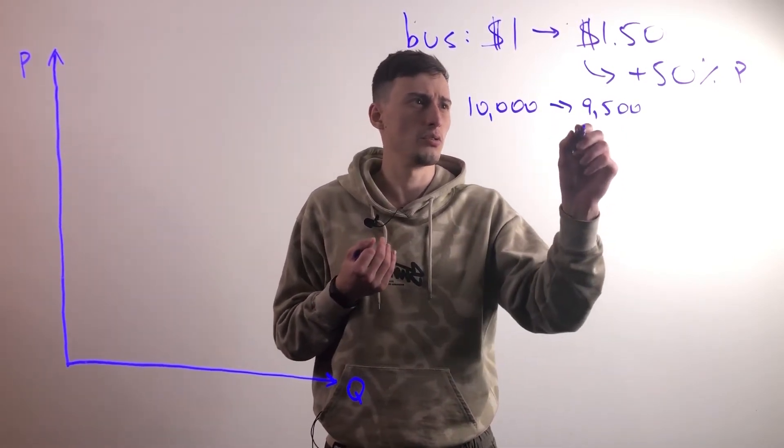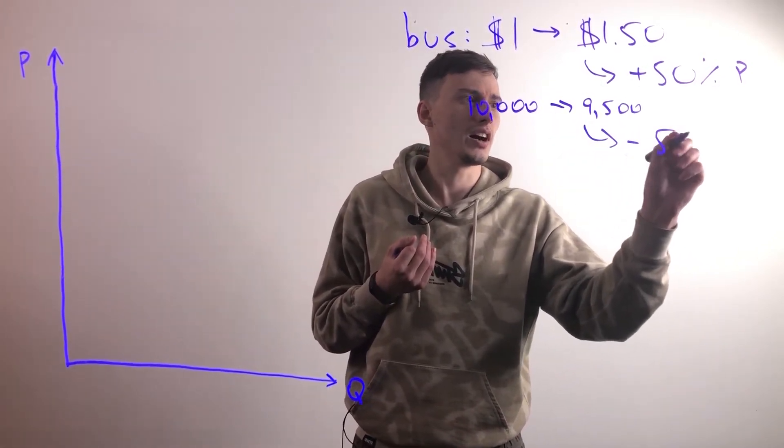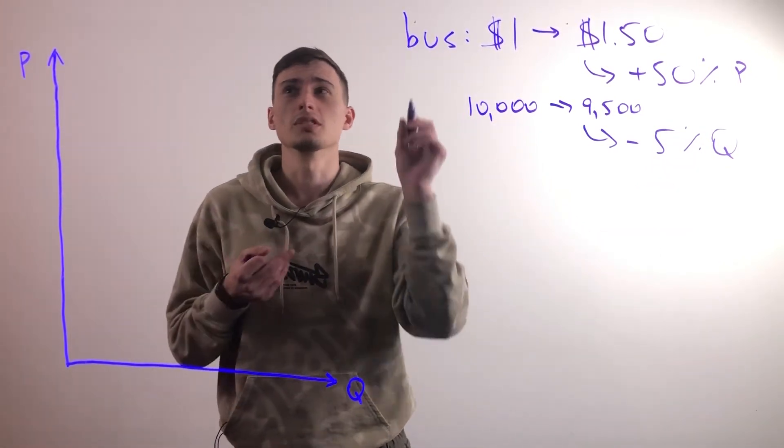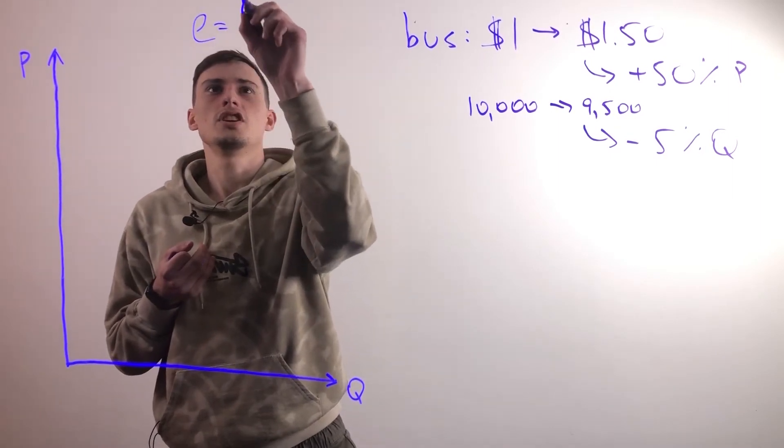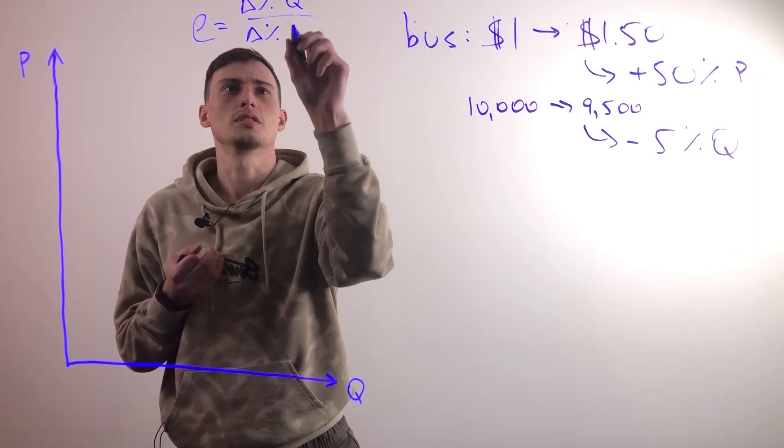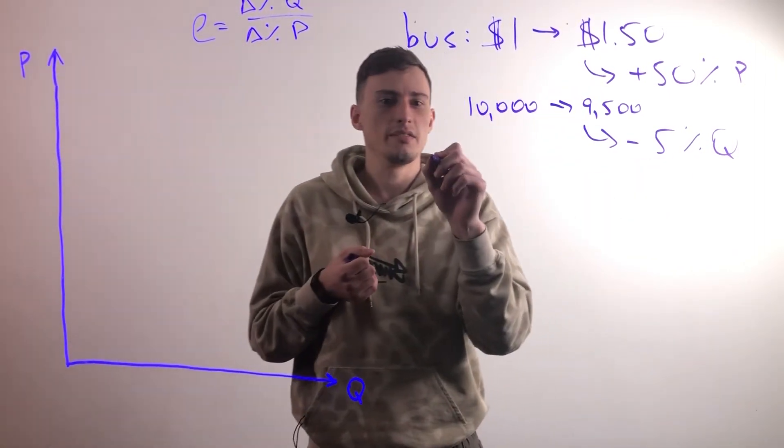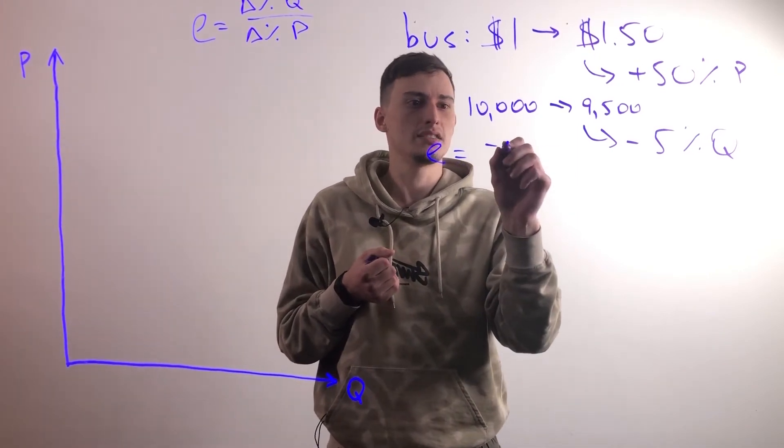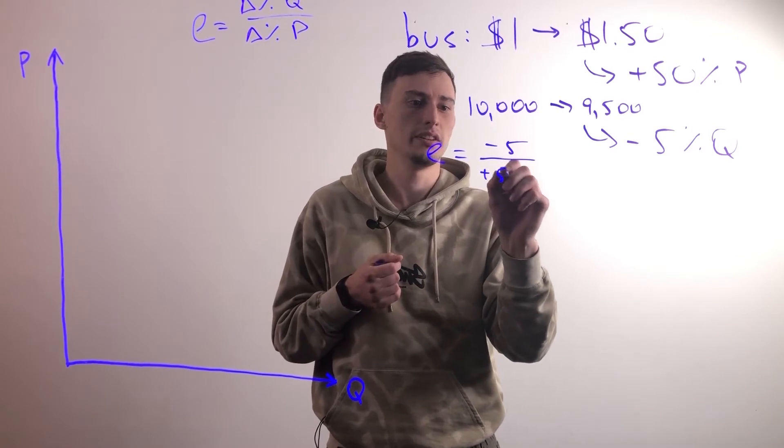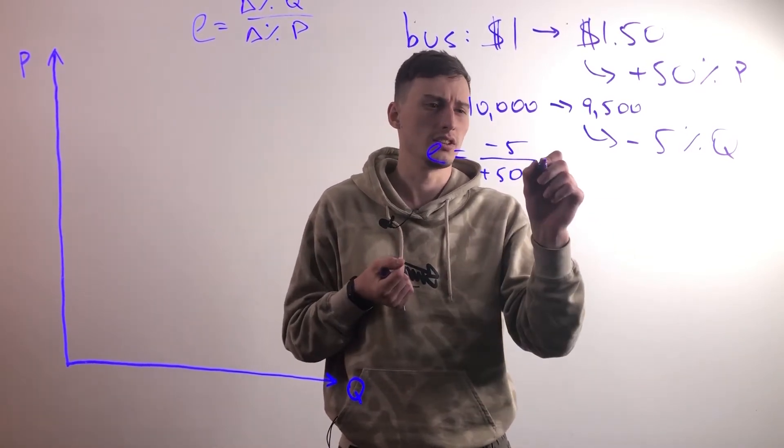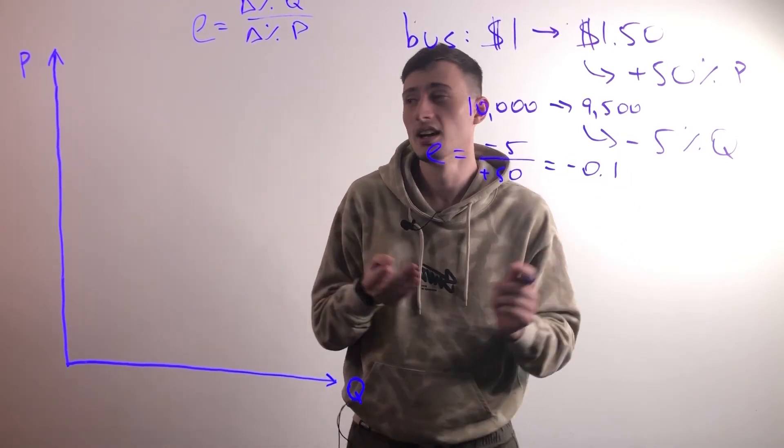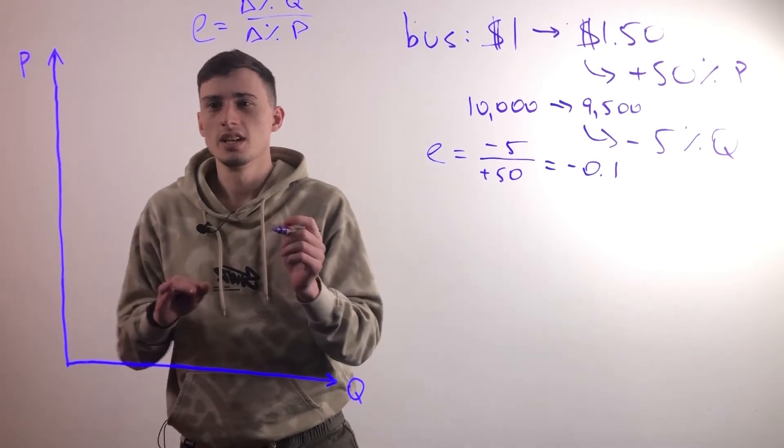So this is minus 500 or a minus five percent increase in quantity. Let's recall the formula for elasticity. It's the percent change in quantity divided by the percent change in price. Now in this case, we have elasticity is equal to minus five percent change in quantity divided by plus 50 percent change in price. So in other words, this is equal to minus 0.1 elasticity.